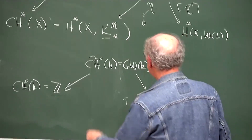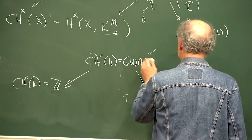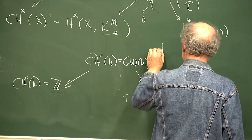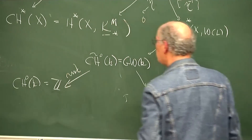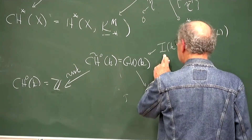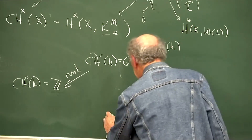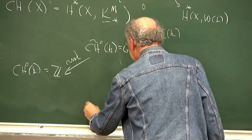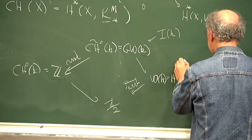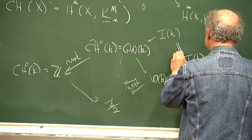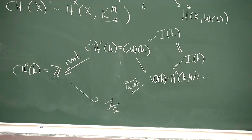One last thing: the kernel of the rank map from the Grothendieck-Witt ring to Z, when you mod it out by a rank-two quadratic form, gives a rank map to Z mod 2, and this square is a Cartesian square. It says the kernel of the mod-2 rank map on the Witt ring is the same as the kernel of the rank map on the Grothendieck-Witt ring. In other words, all the essentially quadratic information in the Grothendieck-Witt ring is maintained when you pass to the Witt ring.